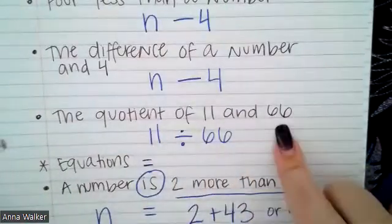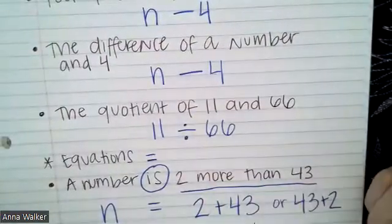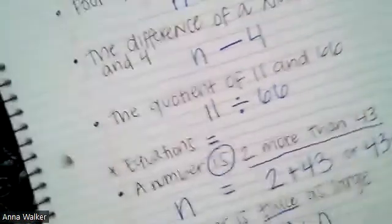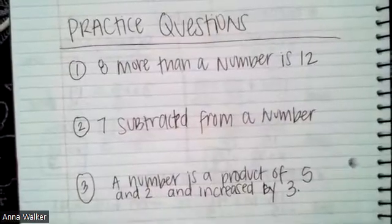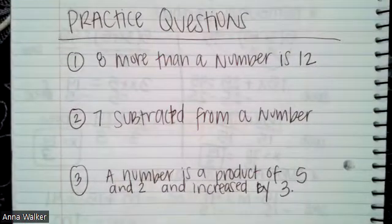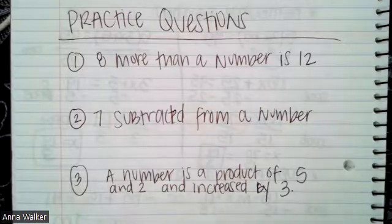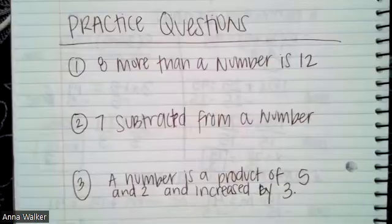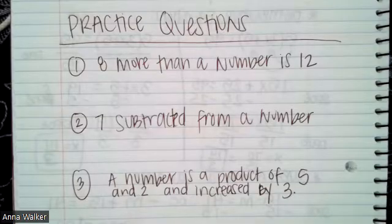So a number, or in this case, 11 went first, then the second piece of information they gave us went second or after the mathematical operation. If this is your second time watching the video and you are ready for your practice questions, here they are. You have three of today. You have eight more than a number is 12, seven subtracted from a number that says subtracted. Sorry, my handwriting's a little messy there.